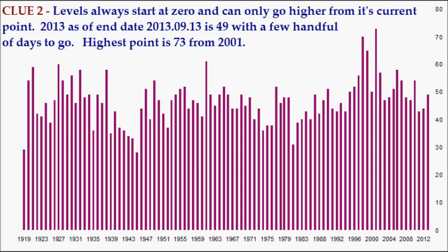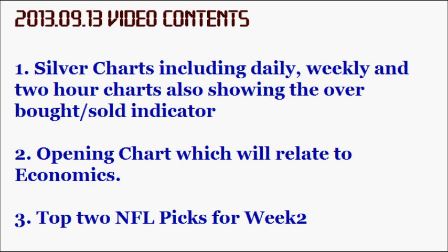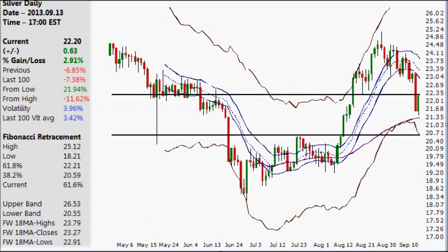The highest point is 73 from 2001. A few dozen people have probably figured this out now. The contents for today: first, we're going to go over some silver charts — the daily, weekly, and two-hour time frames — also showing the no-name indicator for overbought and oversold conditions. Second, we'll go over the opening chart and other charts relating to economics. We'll finish with the top two picks for the NFL for week number two.